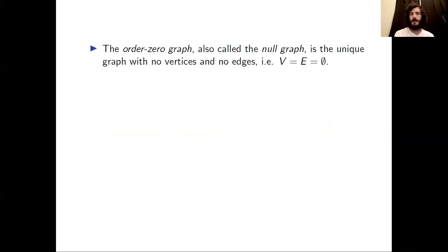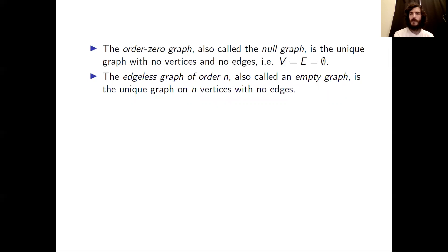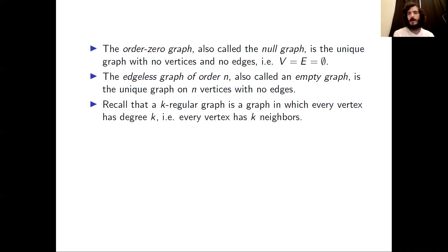One of the simplest possible graphs is the order-zero graph, also called the null graph. This is the unique graph that has no vertices and no edges — both the vertex set and edge set are empty. Another special family are the edgeless graphs of order n: for each n, there exists a unique graph on n vertices with no edges. We defined k-regularity previously — a k-regular graph is one where every vertex has degree k — so edgeless graphs are zero-regular.